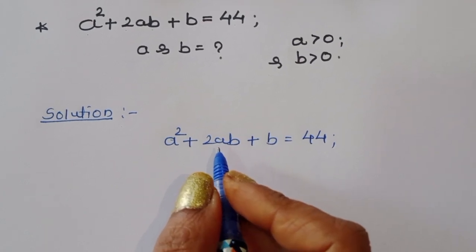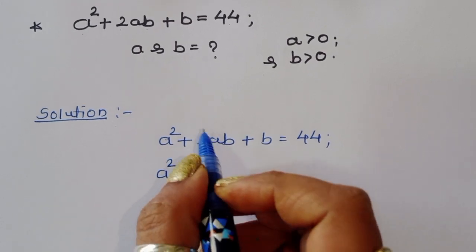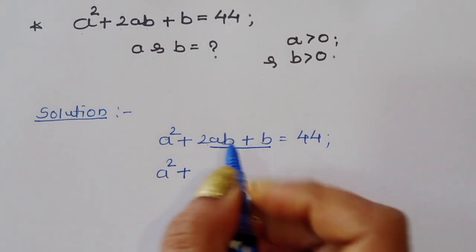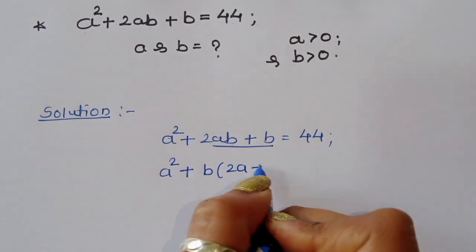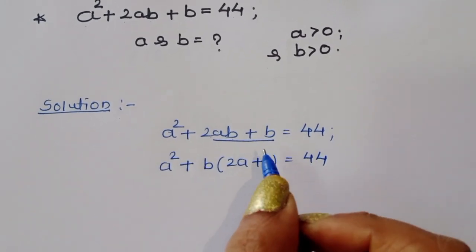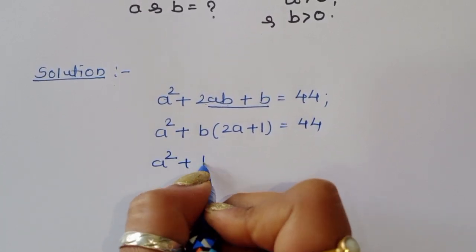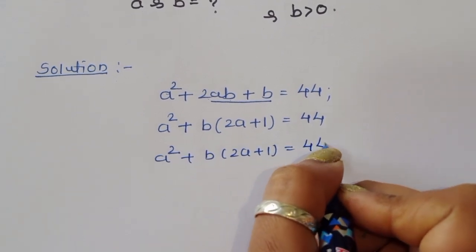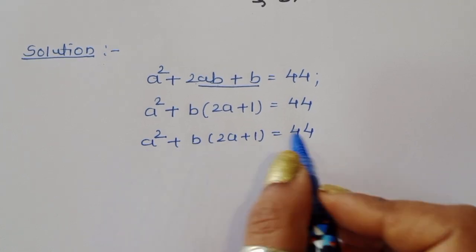We have a² + 2ab + b = 44. We can take b common from the last two terms: 2ab + b = b(2a + 1). So we get a² + b(2a + 1) = 44.